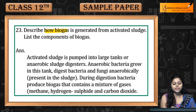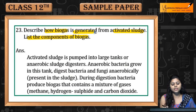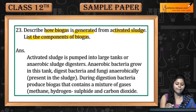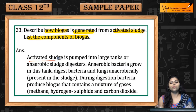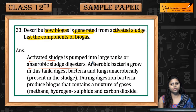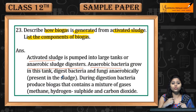Question number 23: Describe how biogas is generated from activated sludge. Activated sludge को pump करते हैं into anaerobic sludge digester, जो कि large tanks हैं। Anaerobic bacteria present होते हैं वहाँ पे, जो grow करते हैं।